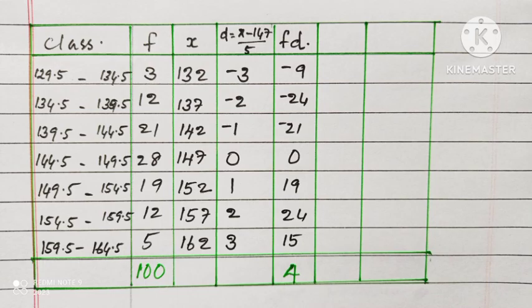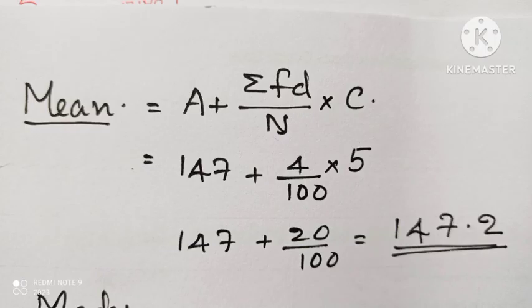After that we find fd, which is f into d. The sum of fd is 4. Mean is equal to a plus sigma fd by n into c.